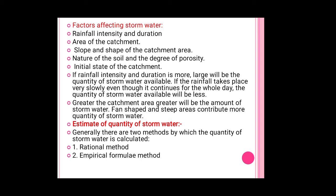The factors affecting stormwater are: rainfall intensity and duration; area of catchment; slope and shape of catchment area; nature of soil and degree of porosity; and initial state of catchment. If rainfall intensity and duration are more, the quantity of stormwater available will be large. If rainfall takes place very slowly, even if it continues for the whole day, the quantity of stormwater will be less. Greater the catchment area, greater will be the amount of stormwater. Fan-shaped and steep areas contribute more quantity of stormwater.